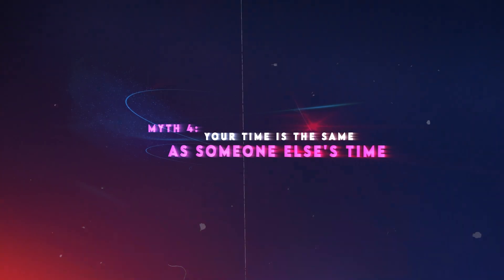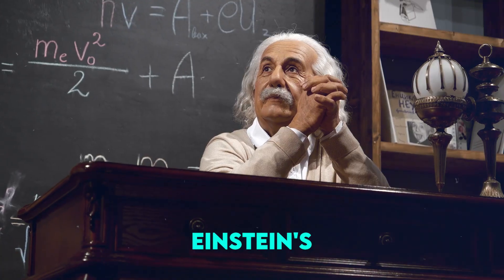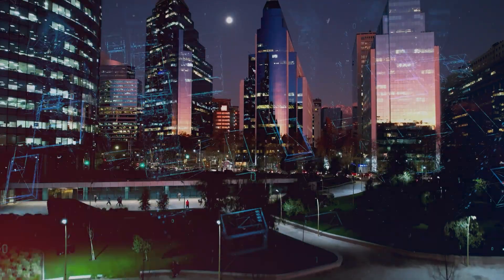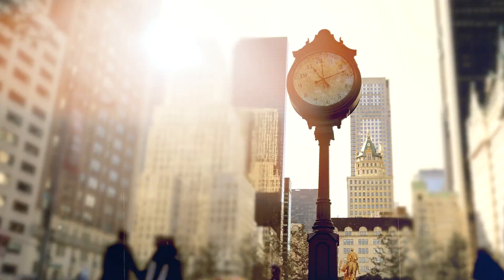Myth 4. Your time is the same as someone else's time. Time, as we perceive it, is not as absolute as it seems. Einstein's theory of relativity, formulated in the early 20th century, revolutionized our understanding of time and space. According to relativity, time is not uniform, but relative to the observer's motion and gravitational field.